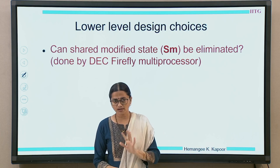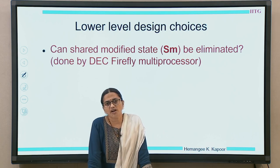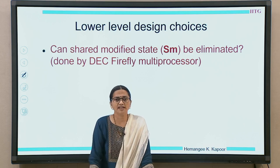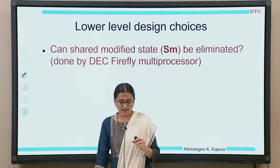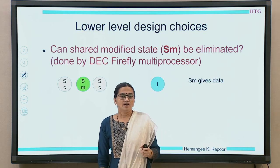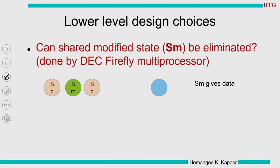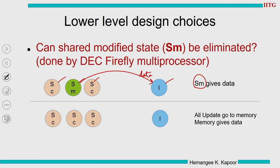Now lower-level design choices: can the SM state be eliminated? This is done in the DEC Firefly multiprocessor. Think about it: SM exists because it takes responsibility for giving data to new readers. If SM is eliminated, memory must always give the data. To do this, every time a write happens, also update main memory — then there is no SM and everybody stays in SC.